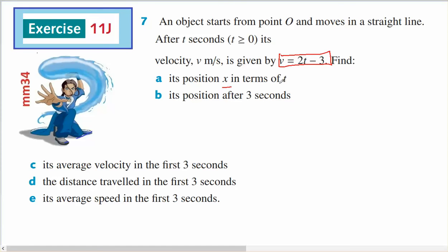So its position in terms of x: x of t will be the integral of v of t dt, which will be the integral of 2t minus 3 dt, which is t squared minus 3t plus a constant c.